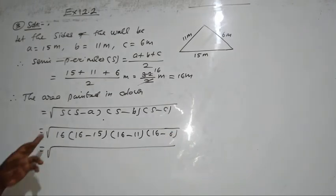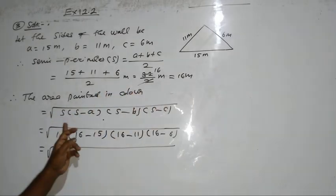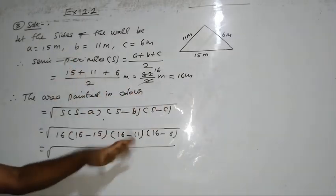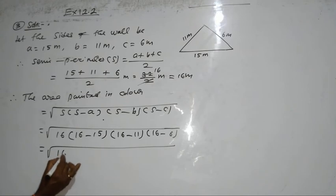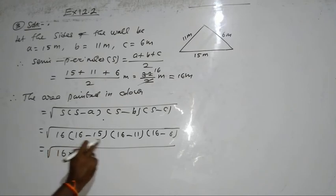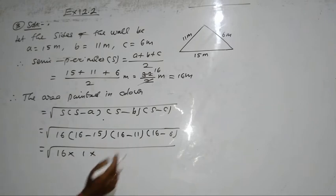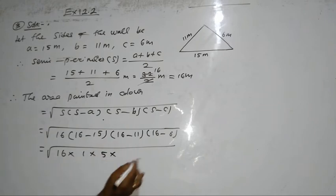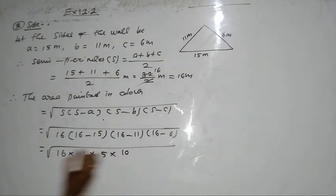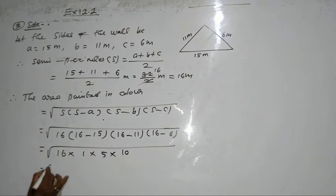I hope you understand that. You have substituted the value. S value is 16, A value is 15. Now, 16 into 16 minus 15, it is 1. 16 minus 11, it is 5. 16 minus 6, it is 10.